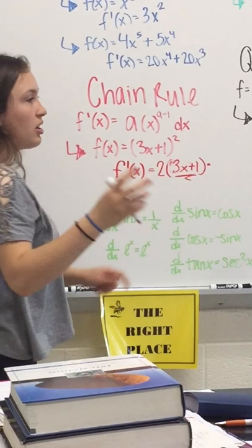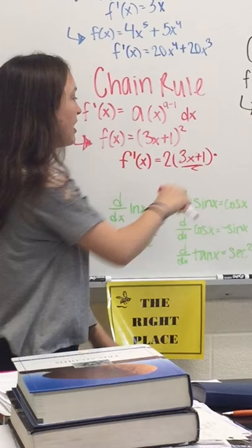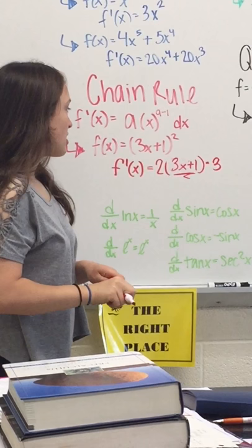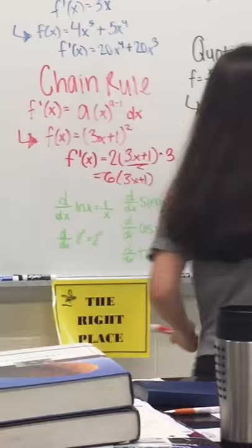So, the 1, any constant, that's the word I was looking for, any constant just goes away. And then any single x value just becomes the 3. So, if you simplify it more, you could have 6, 3x plus 1 as your result.